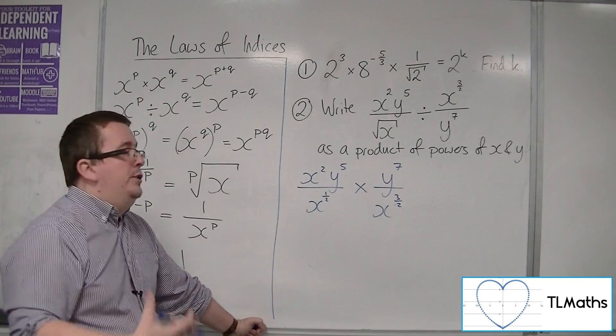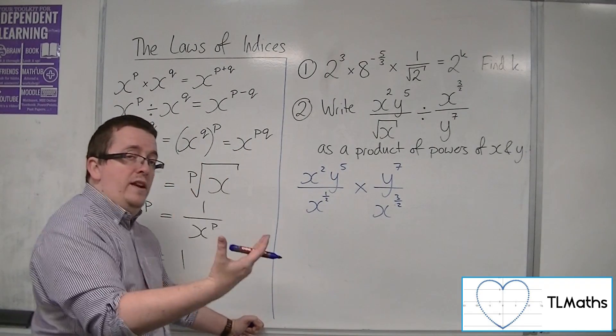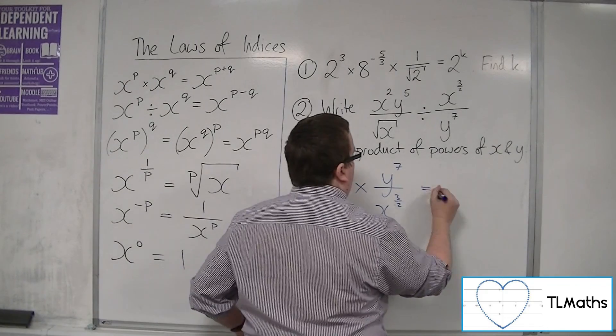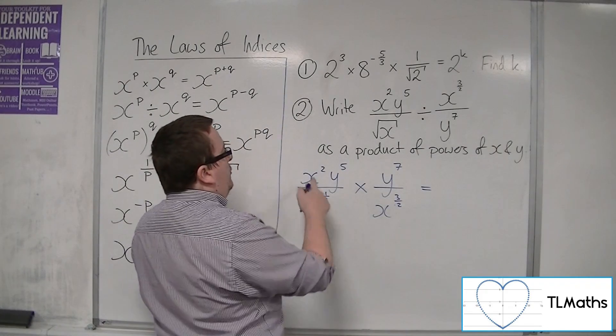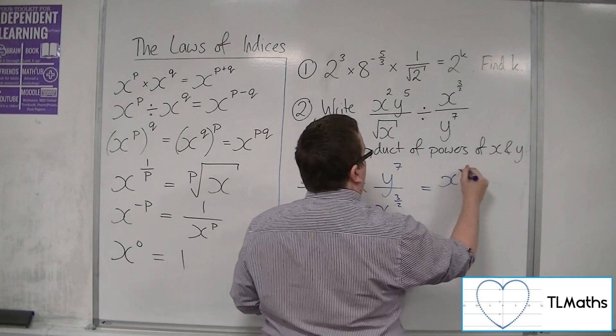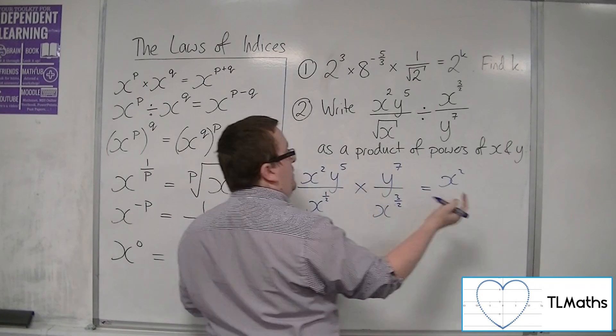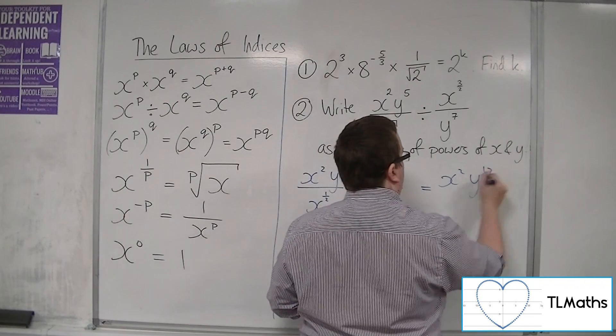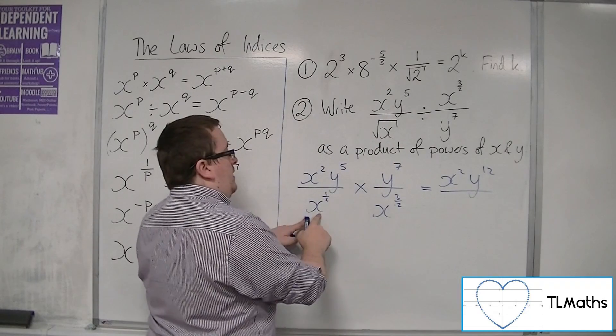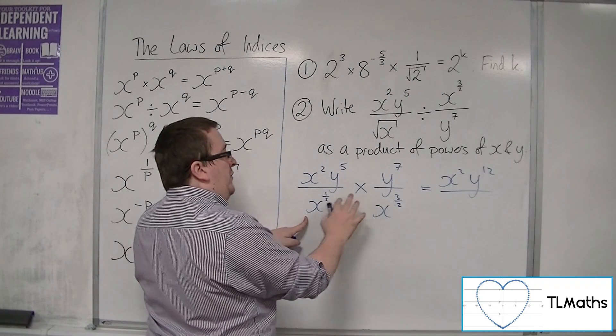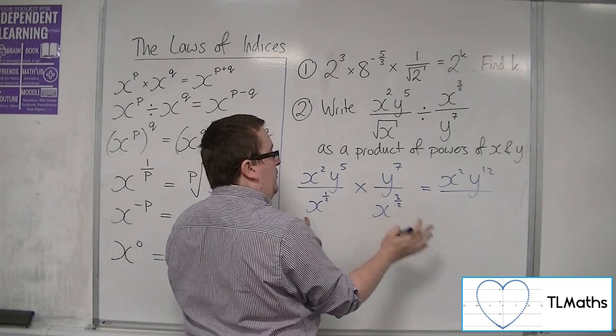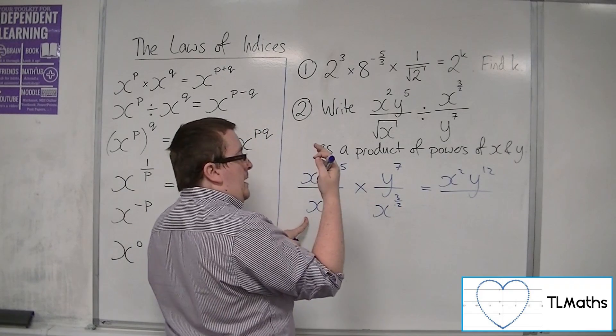At this point, you can multiply the numerators and denominators together when you multiply fractions. So you've got x squared, and then y to the 5 times y to the 7 is y to the 12. And you've got x to the half times x to the 3 halves, so the powers add together. A half plus 3 halves is 2.